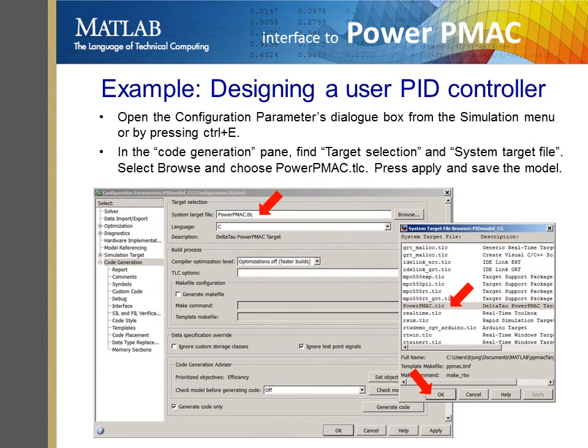When the model design is complete, to start the code generation process, the user needs to choose PowerPMAC.tlc as the system target file. This should be done in the code generation pane of the Configuration Parameters dialog box.